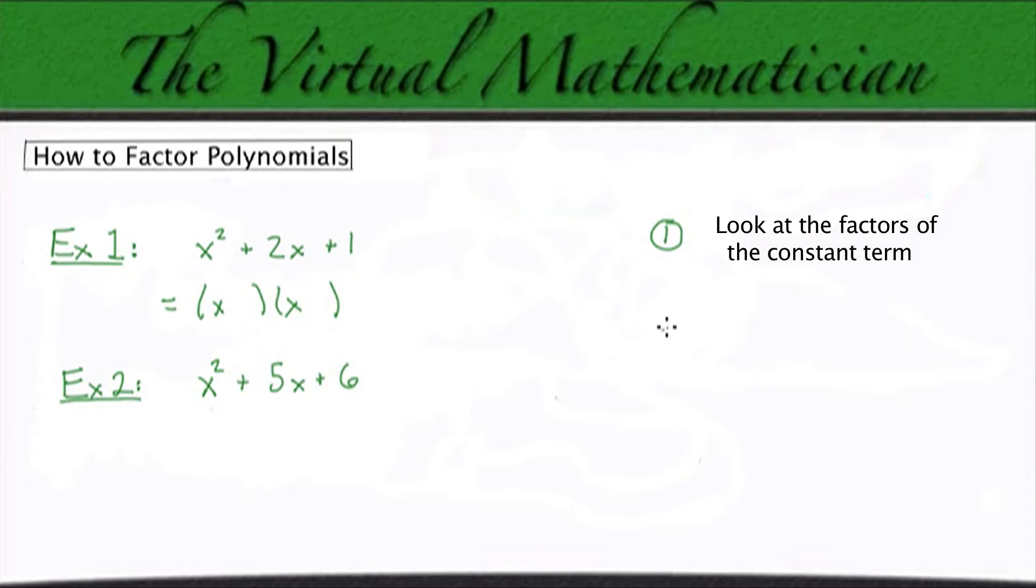And the second step is going to be to find two factors that add up to give us the x coefficient. Now, to see what we really mean, let's look at these examples.